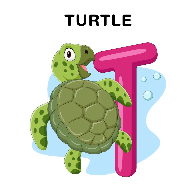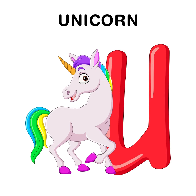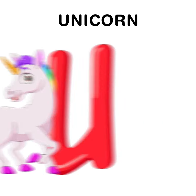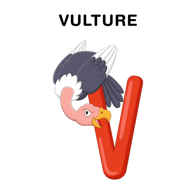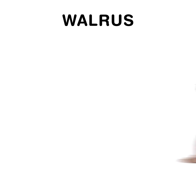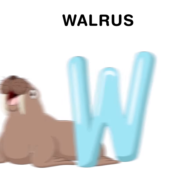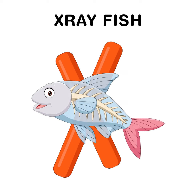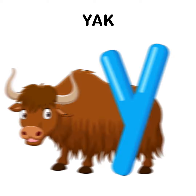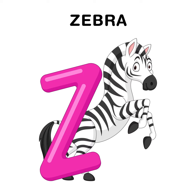U for unicorn, V for vulture, W for walrus, X for x-ray fish, Y for yak, Z for zebra.